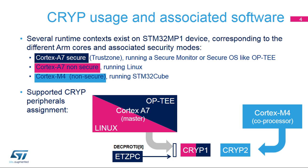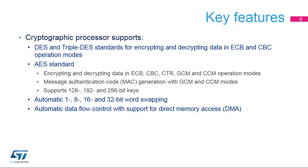Crypt1 is first initialized by the ROM code and used for authentication processing. It is also used by the application's secure boot, TF-A, during the authentication process using ROM code services. The cryptographic processor supports the Data Encryption Standard, or DES, the Triple DES, and the Advanced Encryption Standard, or AES, in several operating modes described in the next slides. Both standards are part of the block cipher algorithm family.